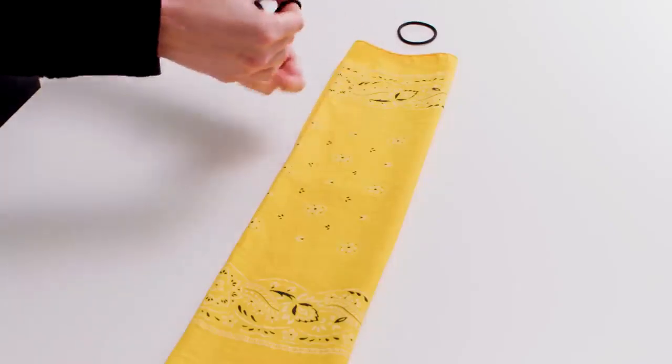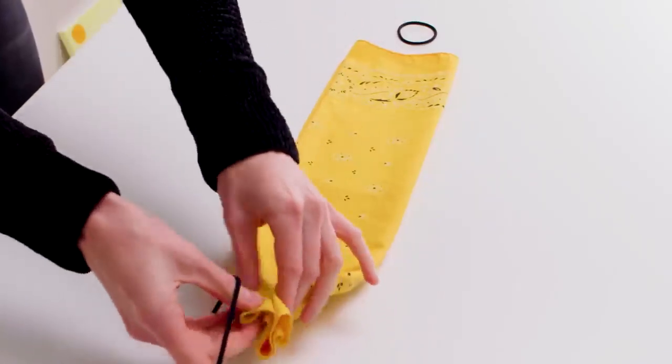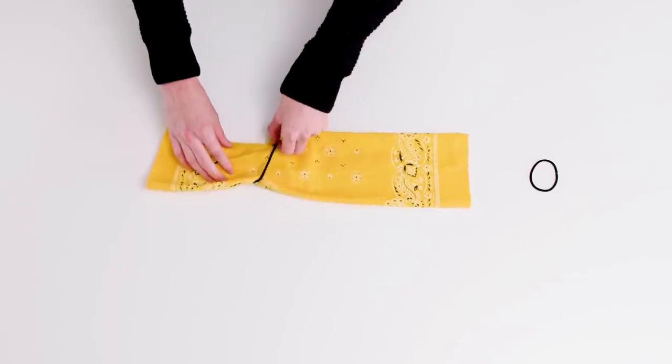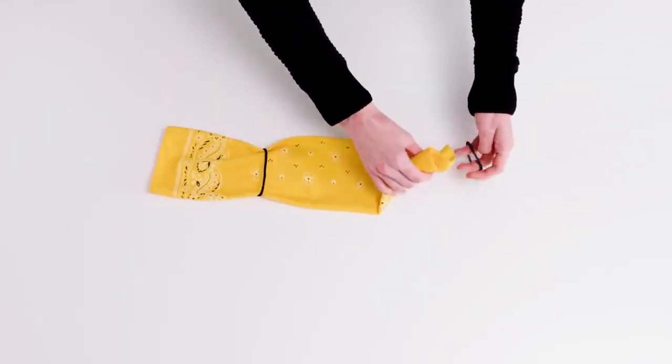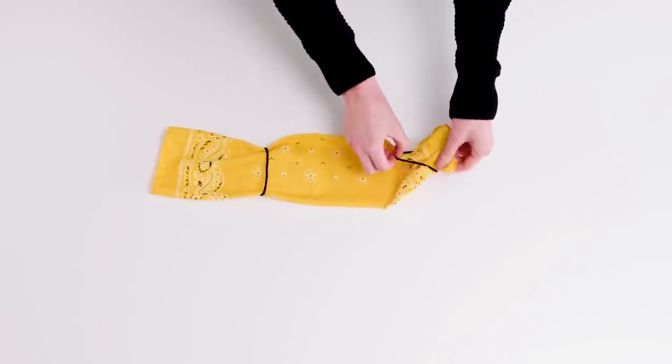Take one of the hair ties or rubber bands and wrap around the cloth, pulling it through the center of the hair tie or rubber band. The hair ties or bands should be about 6 inches apart.